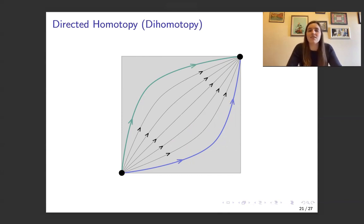Now extending that to directed homotopy or dihomotopy is we want to have a homotopy between two paths. But it also needs that each intermediate path is directed in the homotopy. So this is an example of a dihomotopy.